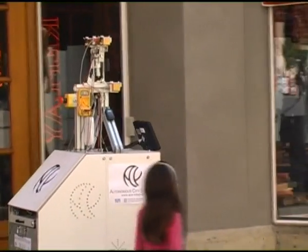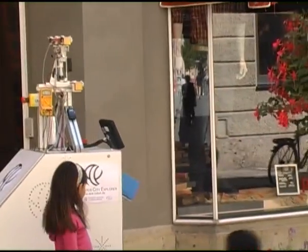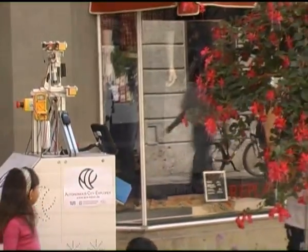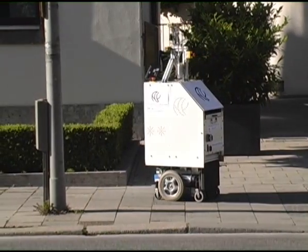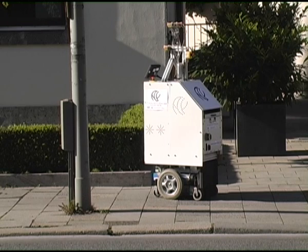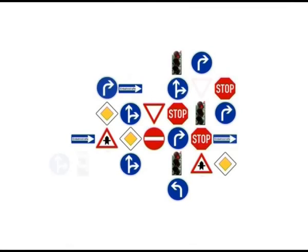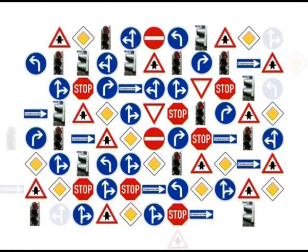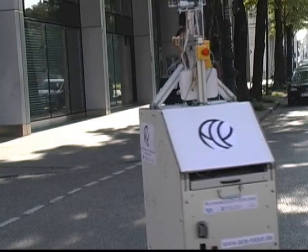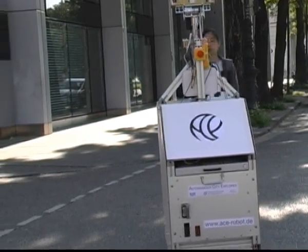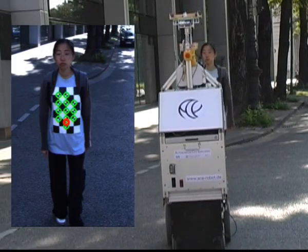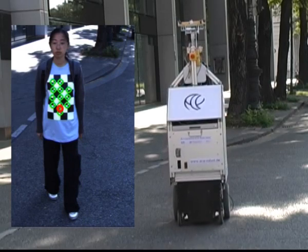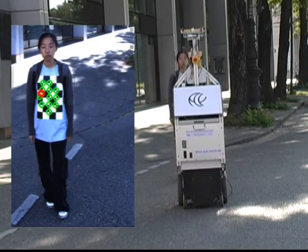For safety reasons, ACE cannot simply cross streets but must stop at intersections and wait. It recognizes intersections by searching for patterns of traffic signs and traffic lights. The robot was trained with about 10,000 example images of traffic signs and lights to learn an abstract representation of the desired patterns. When crossing intersections, ACE has to follow a human for safety reasons, doing so by tracking a t-shirt with a chessboard pattern on it.